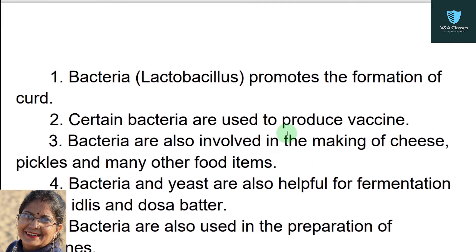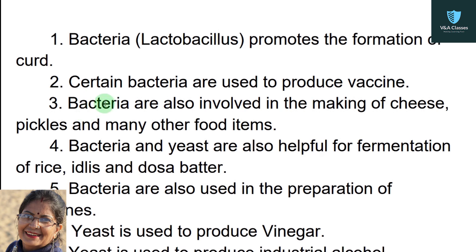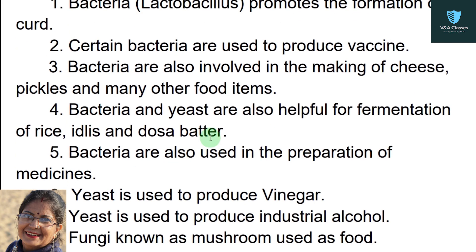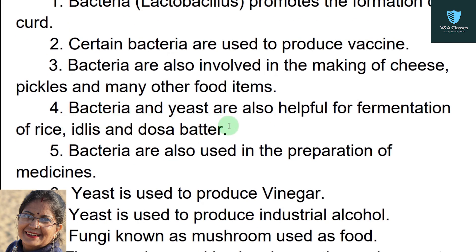Question number 7: write 10 lines on the usefulness of microorganisms in our lives. Answer: microorganisms are used for various purposes. First, bacteria especially Lactobacillus promotes the formation of curd. Second, certain bacteria are used to produce vaccines. Third, bacteria are also involved in the making of cheese, pickles, and many other food items.